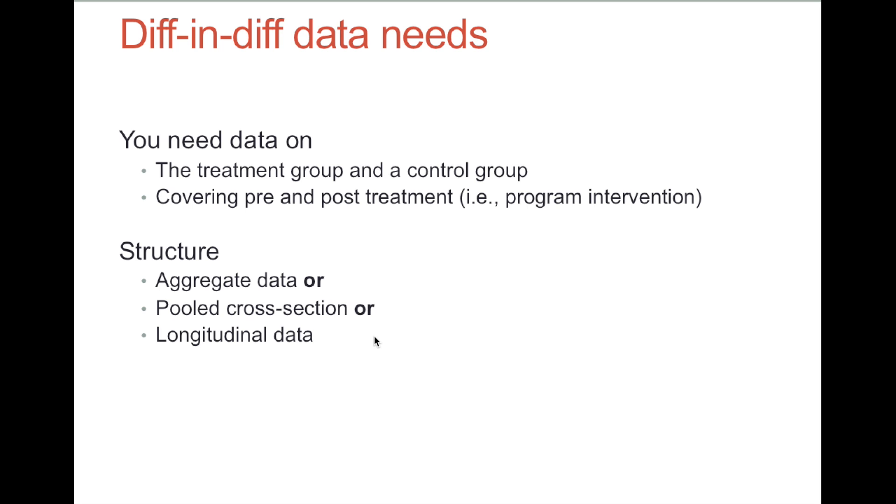As we've seen, all we really need is aggregate level data to compute the estimate, but we can also compute the required sample averages from repeated cross-sectional data if we have that, that is separate samples for each cell, or longitudinal data, where we observe the same people in both time periods.